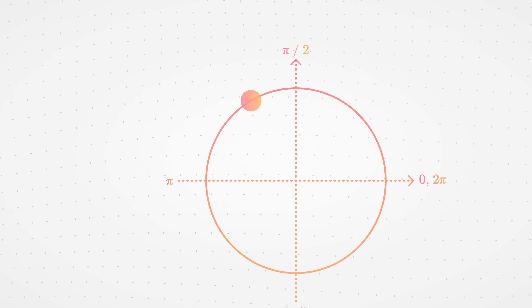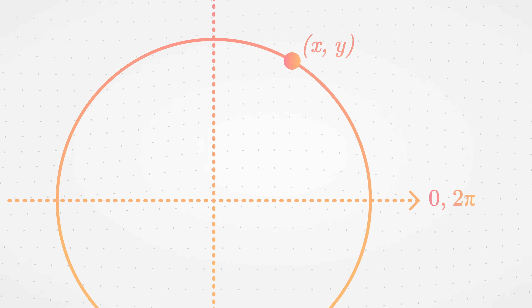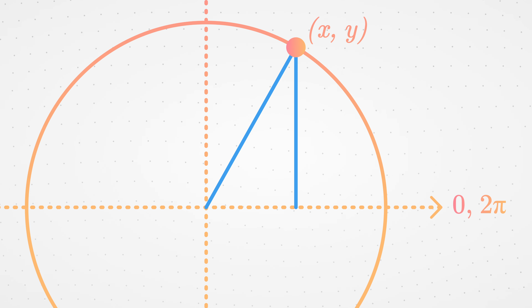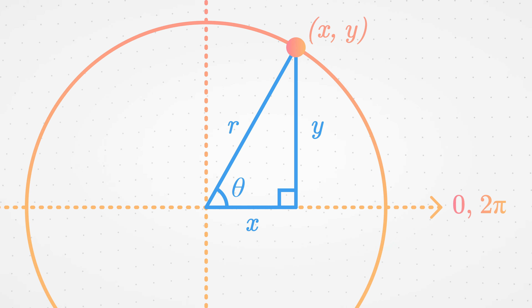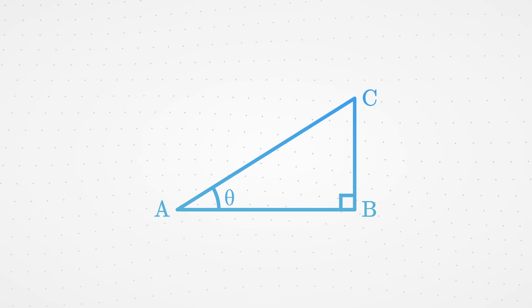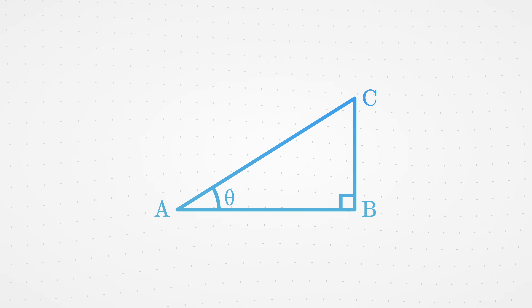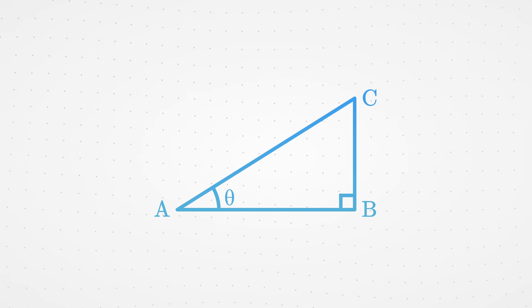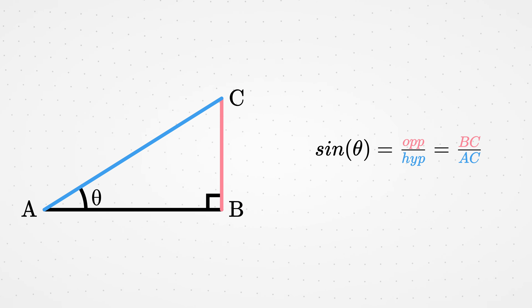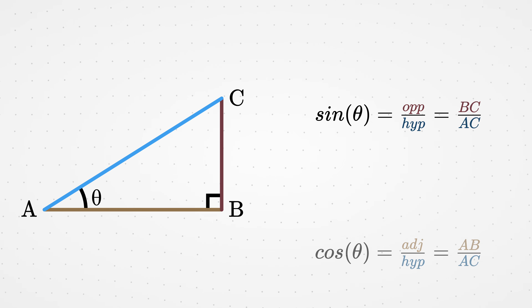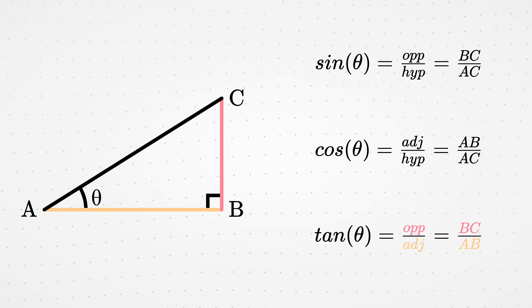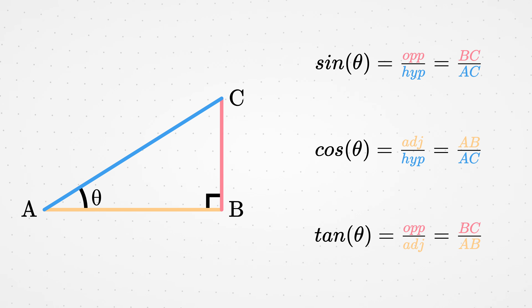We can pick a point on that circle and draw two lines: one that goes through the center of the circle, and a line perpendicular to the x-axis. We see a right triangle appear, which we'll use to briefly introduce our trigonometric functions. We pick a non-perpendicular angle from the triangle — here we choose theta — and we can define three trigonometric functions: sine theta equals opposite side divided by hypotenuse, cosine theta equals adjacent side divided by hypotenuse, and tangent theta equals opposite side divided by adjacent side.